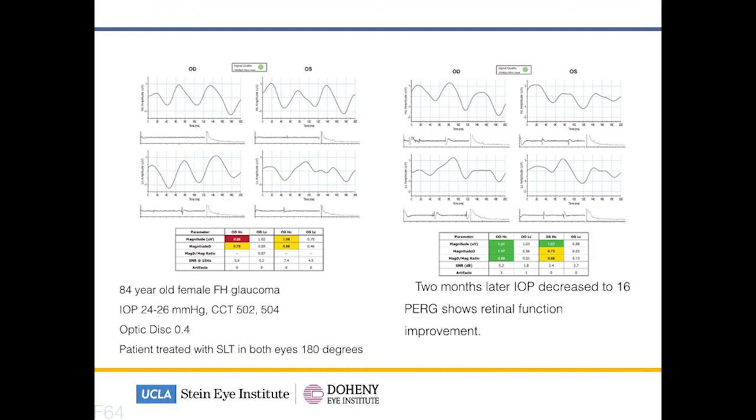In summary, we use this in certain cases: we use it to detect progression, we use it to detect reversal of damage in patients that are treated, and we use it to differentiate normal from early glaucoma. Thank you very much. This is Brian Francis signing off from ASCRS.